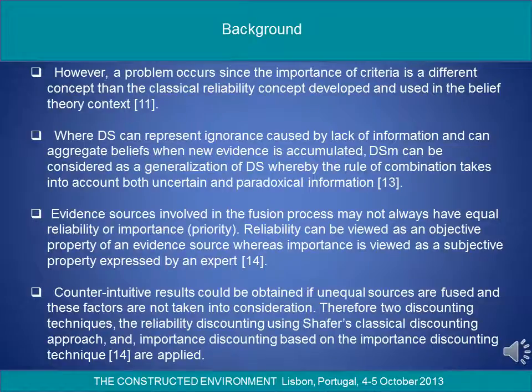However, a problem occurs since the importance of criteria is a different concept than the classical reliability concept developed and used in the belief theory context. Where Dempster-Schafer can represent ignorance caused by lack of information and can aggregate beliefs when new evidence is accumulated, DSmT can be considered as a generalization of Dempster-Schafer, whereby the rule of combination takes into account both uncertain and paradoxical information. Evidence sources involved in the fusion process may not always have equal reliability or importance. Reliability can be viewed as an objective property of an evidence source, whereas importance is viewed as a subjective property expressed by an expert.